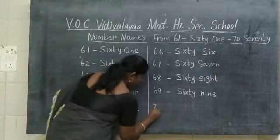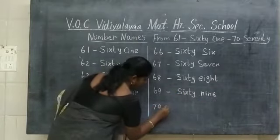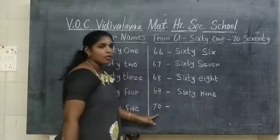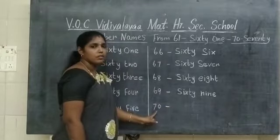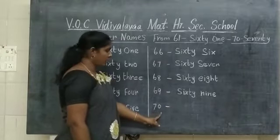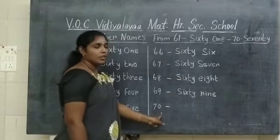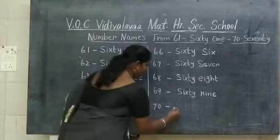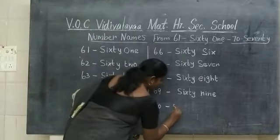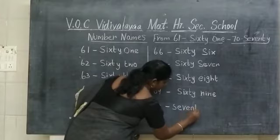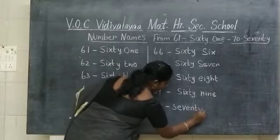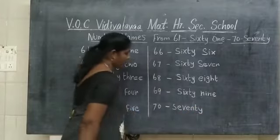7, 0 — 70. What number is this? 70. What is the number name of 70? S-E-V-E-N-T-Y. 70.